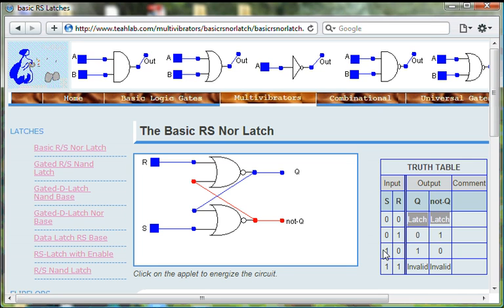Now let's go to the case or the input condition where set equals 1 and reset equals 0 to see what happens to the output. Here, Q goes high or to 1 and not-Q goes low or to 0 as the truth table shows.